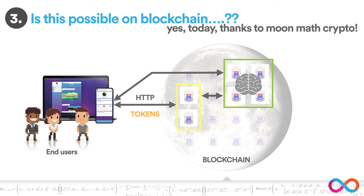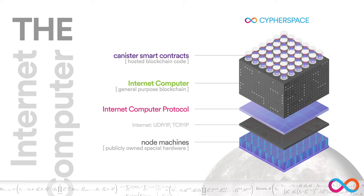I'm talking about the Internet Computer, which creates an environment in cyberspace where you can host these smart contracts. The Internet Computer is created from special node machines that are run by independent parties around the world — essentially publicly owned machines. These are combined over the Internet by something called Internet Computer Protocol, which is where the ICP token takes its name from. Internet Computer Protocol creates the Internet Computer, which is a general purpose blockchain, a kind of world computer blockchain.